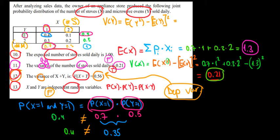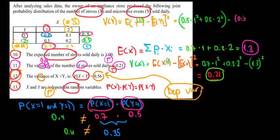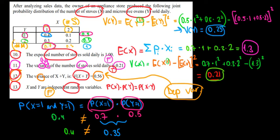Let's calculate. We have 0.5 times 1 squared plus 0.5 times 2 squared, minus the expected value of Y squared, where the expected value of Y is 0.5 times 1 plus 0.5 times 2, all to the power of 2. Calculating this, we find the variance of Y equals 0.25. Therefore, the standard deviation of Y is the square root of 0.25, which equals 0.5.